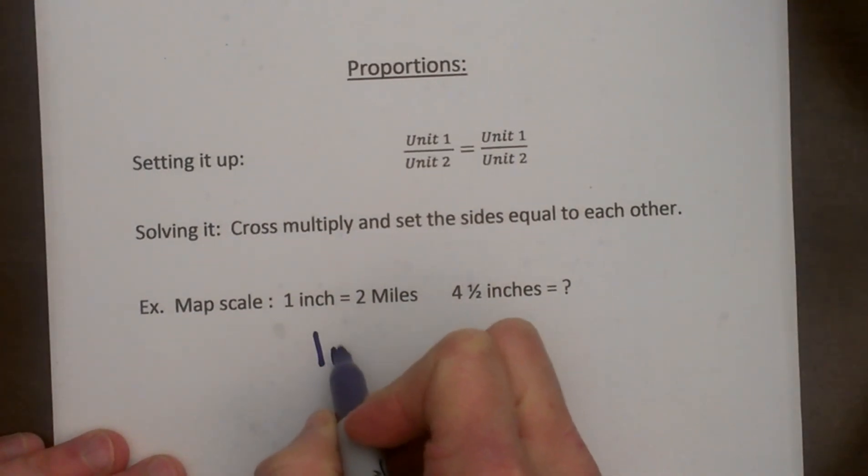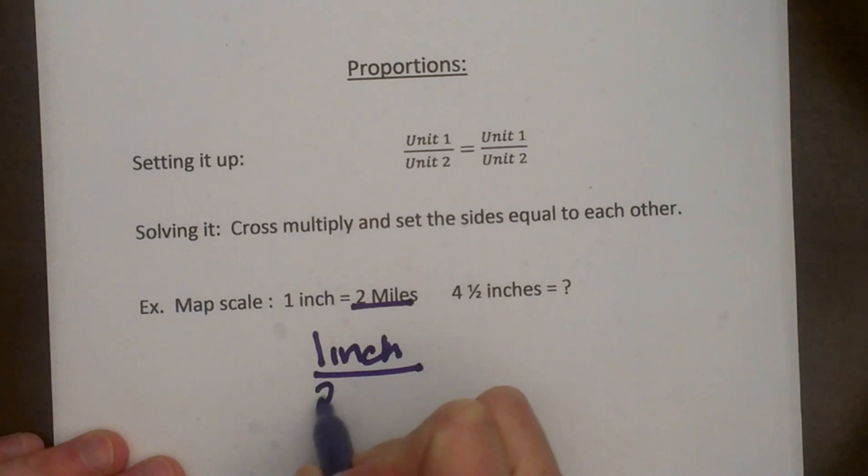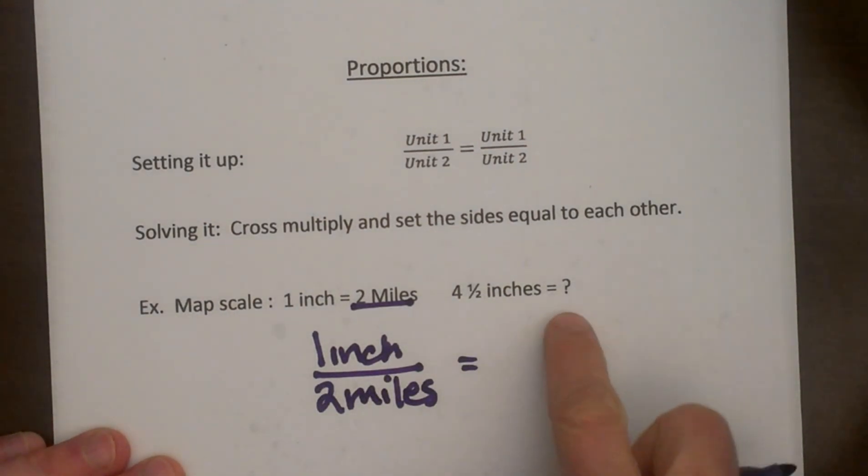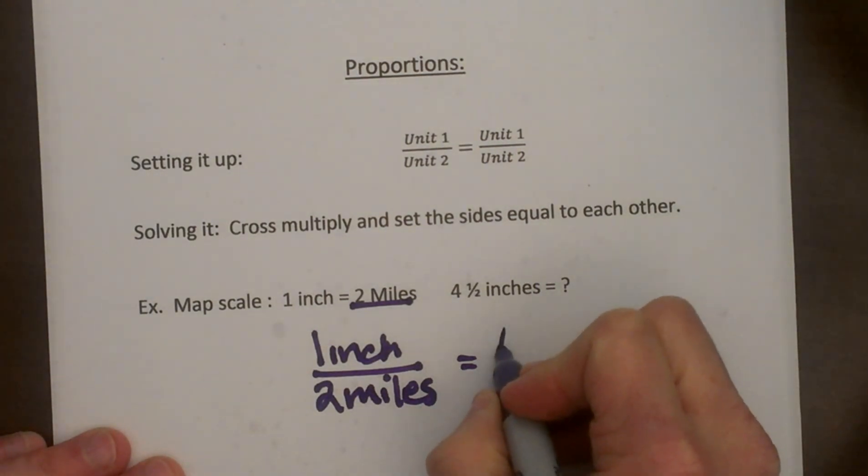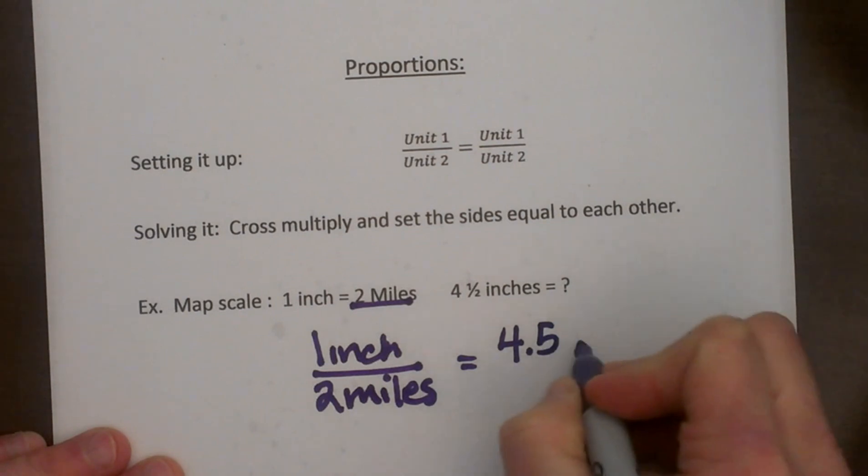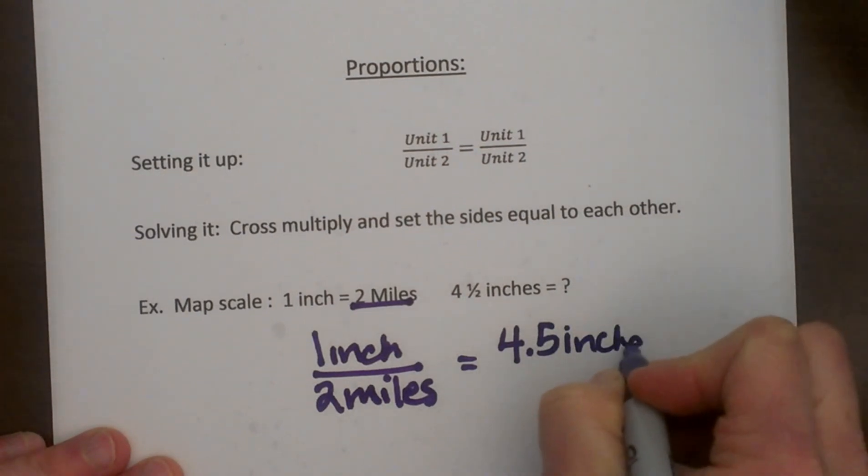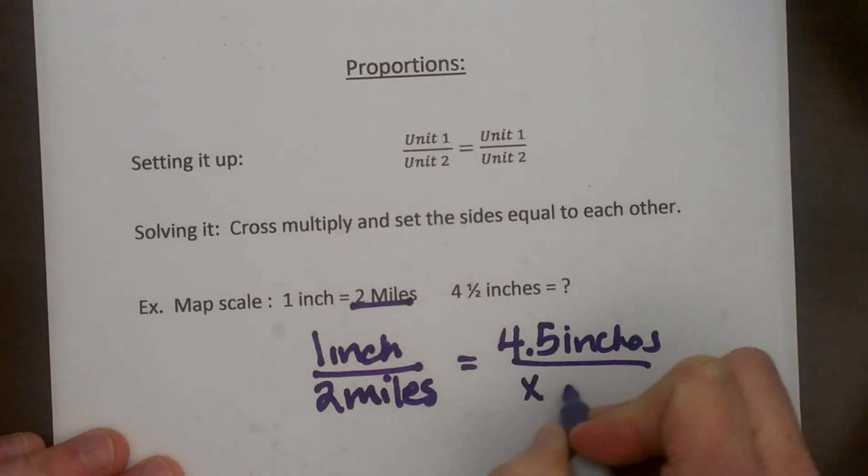So we have 1 inch is to 2 miles. So we have inches on top and miles in the denominator. So the second fraction has to be the same units. So we're going to set up 4.5 inches over x miles.